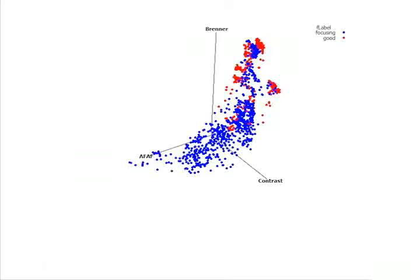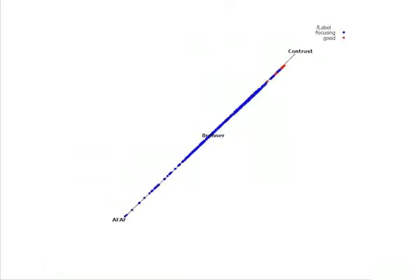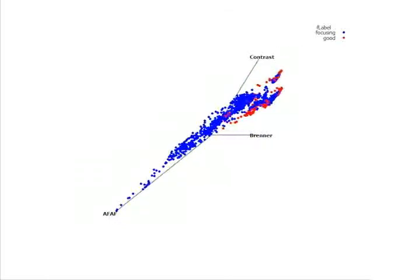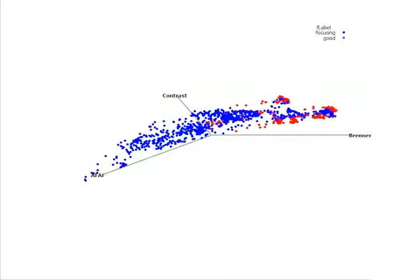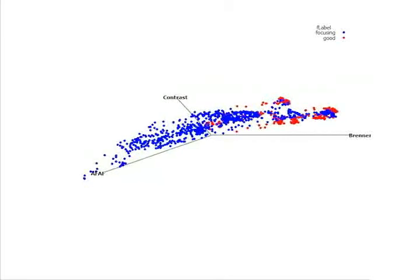We manually labeled 10% of the frames in one video sequence and trained an LDA classifier using these three features. The projection of every frame's feature vector onto the normal vector of the LDA classification plane was used as a measure to compare frames for focus quality.